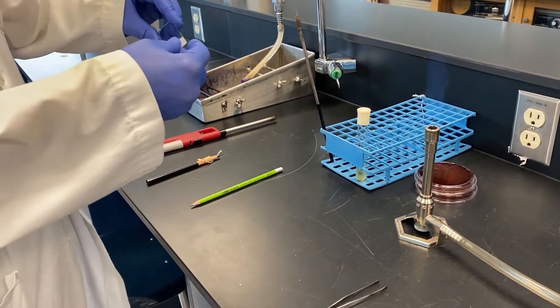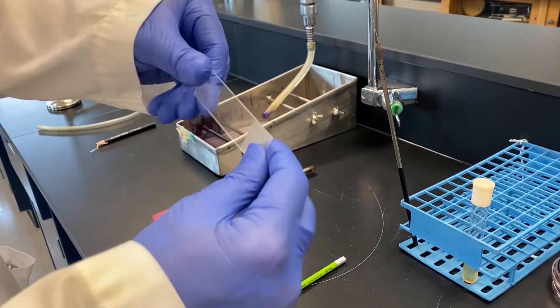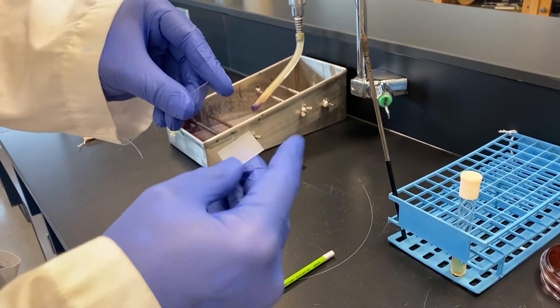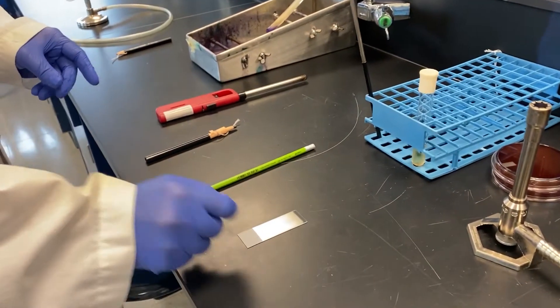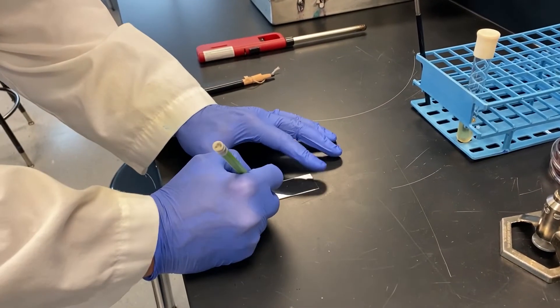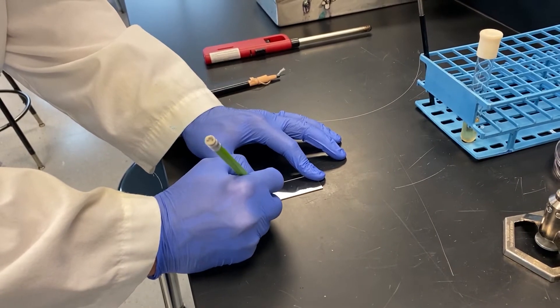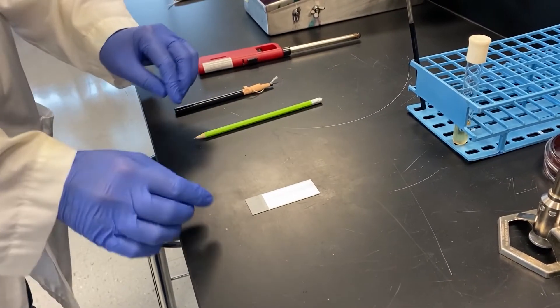The first thing you should do is label your slide. You'll need to identify the top and bottom of your slide. The top part feels rough. When labeling use a pencil not a permanent marker. Permanent marker can wash off during any staining procedures.